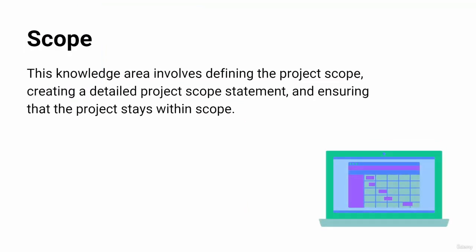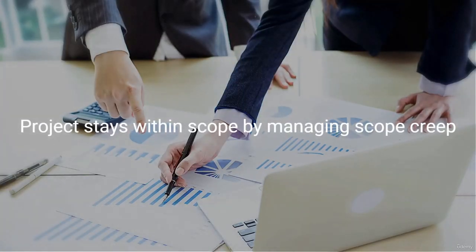The second knowledge area is Scope. This knowledge area involves defining the project scope, creating a detailed project scope statement, and ensuring that the project stays within scope. An example is when a project manager is working on a software development project, using the scope knowledge area to define the project scope, create a scope statement, and manage scope creep.